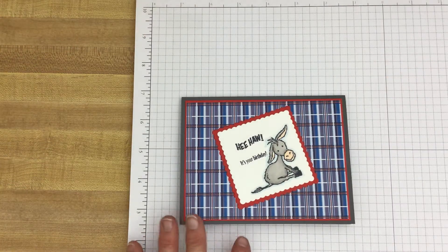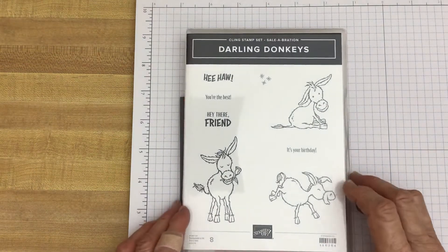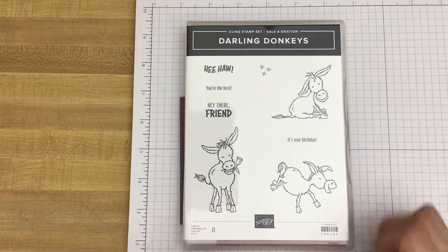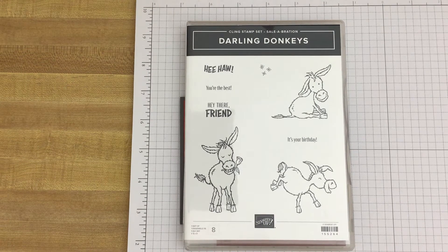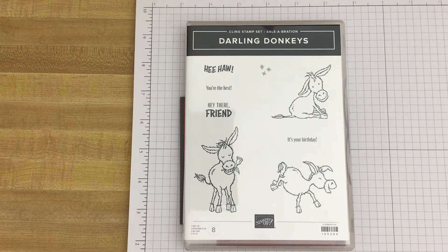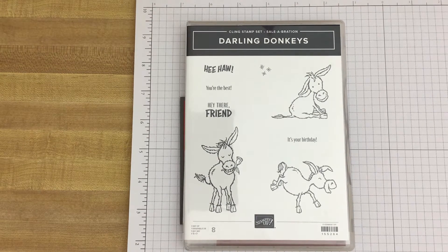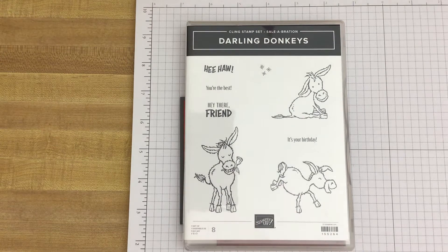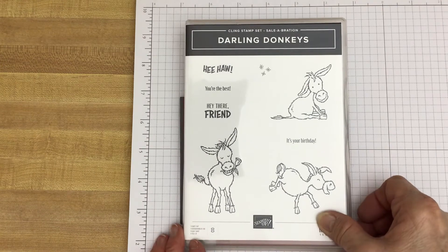Let me show you that stamp set for the donkey card. It's the Darling Donkeys and I made several cards with this set. I think it's just really cute. It is currently in the Sale-A-Bration catalog, which means that with a $50 purchase of Stampin' Up! product, you can choose this for free if you so desire. That's now through the end of February.